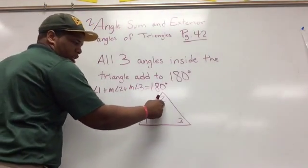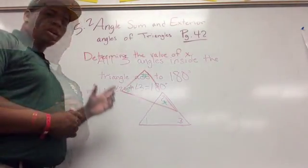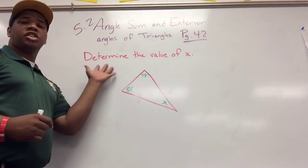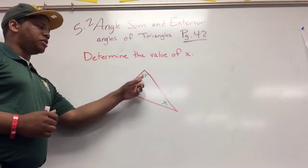I can add up whatever is here plus this plus this and I should get 180. In this example, I'm told to determine the value of x. I'm given the triangle and one of my angles is 78 degrees, another is 51, and the other one is x, and I need to find x.